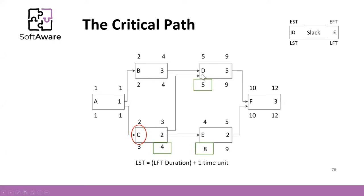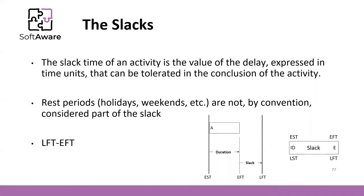The latest start time is calculated as: latest finish time minus duration of the task, plus one unit. So four minus two plus one gives three. We calculate it from the smallest number coming from the latest start times — in this case tasks D and E, and the smallest number is five, so the previous unit of time is four. Having LFT, we can calculate LST. With all these values — EST, EFT, LFT, and LST — it is possible to calculate the slack.